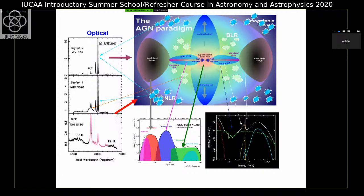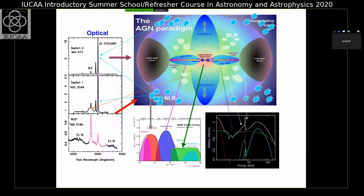In the optical spectrum of many active galactic nuclei, we see emission lines — both broad emission lines with typical widths of 5000 km/s, as well as narrow emission lines with typical widths of 500 km/s. At the center of an active galaxy is a supermassive black hole, which may or may not be rotating. This black hole accretes material, and because of conservation of angular momentum, the material forms an accretion disk. The accretion disk emits in the optical ultraviolet and extreme ultraviolet region.